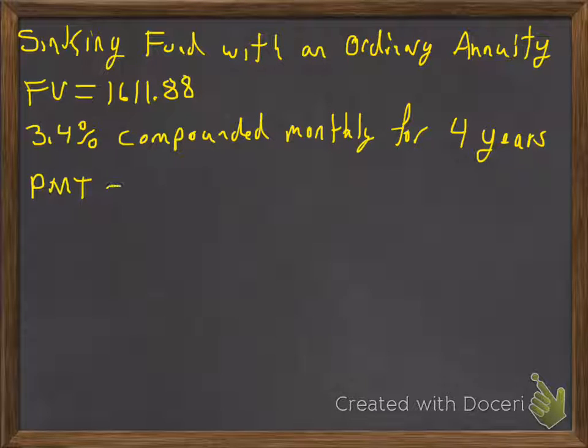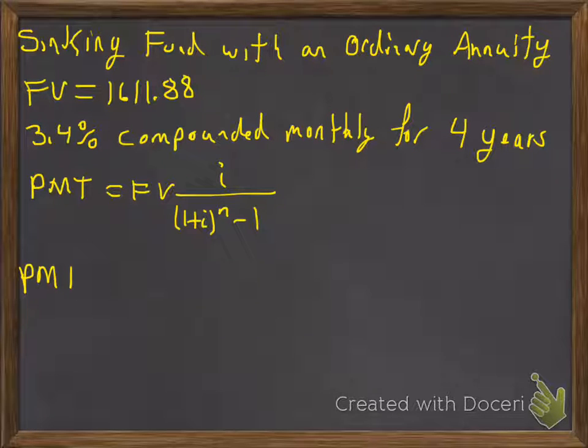The formula for our sinking fund is: periodic payments equal the future value times the interest rate per period divided by (1 plus interest rate per period) raised to n minus 1, where n is the total number of payments, found by number of compounds per year times the number of years.